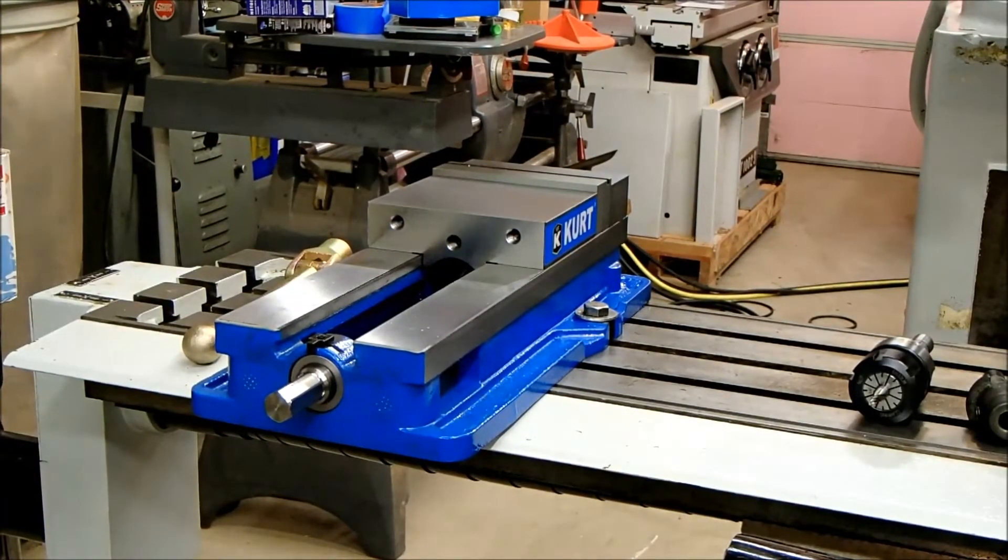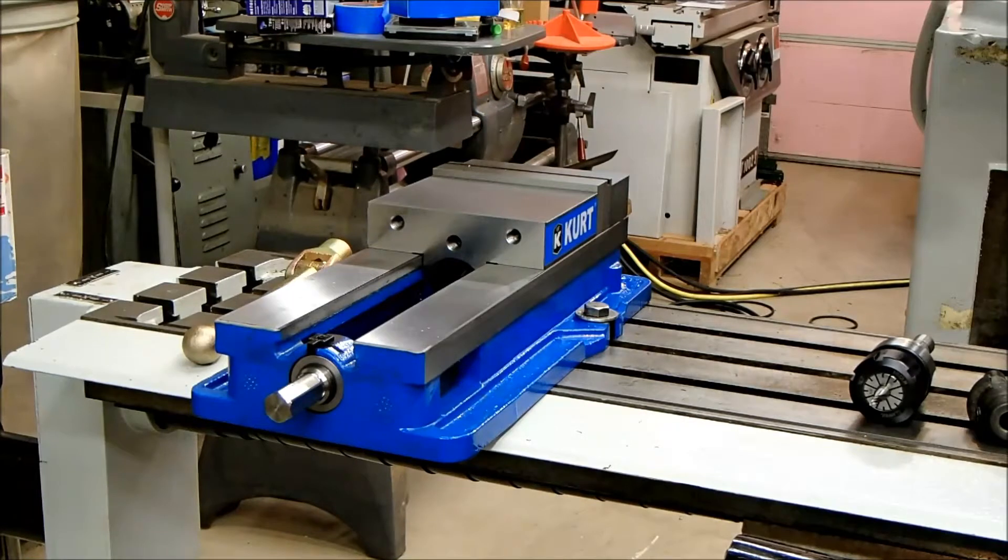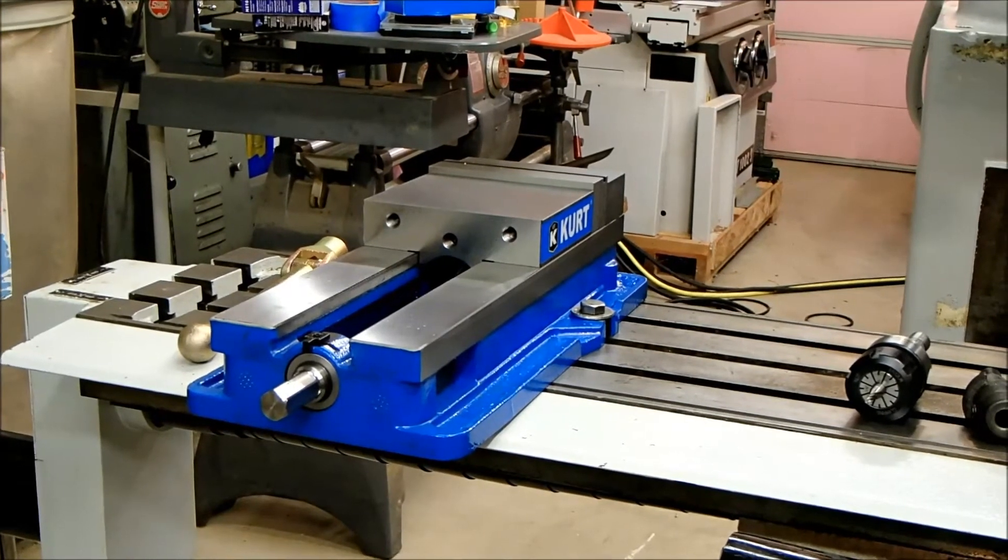Okay, hi everyone. It's Mike Heydrich showing a couple additions to the mill, getting it ready for service. First is a six-inch Kurt D688 vise that should be pretty nice for clamping on the table.